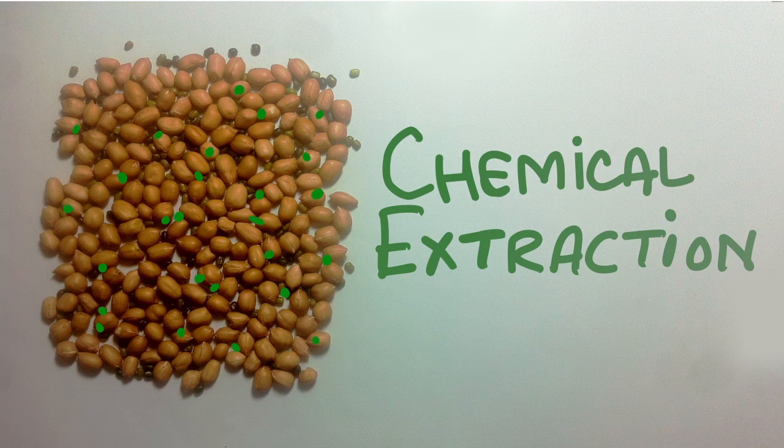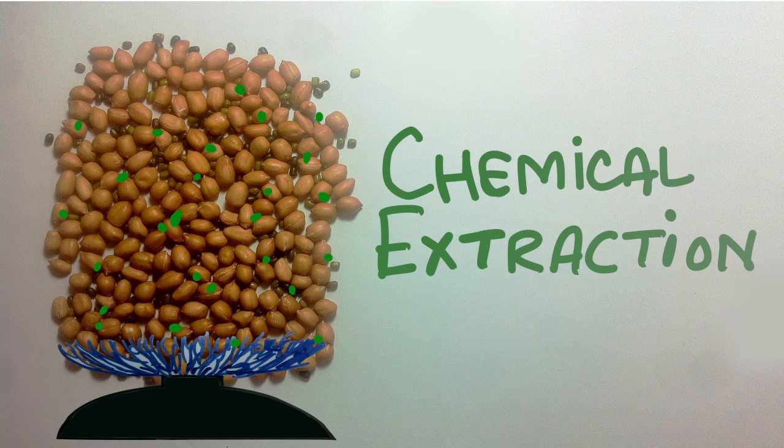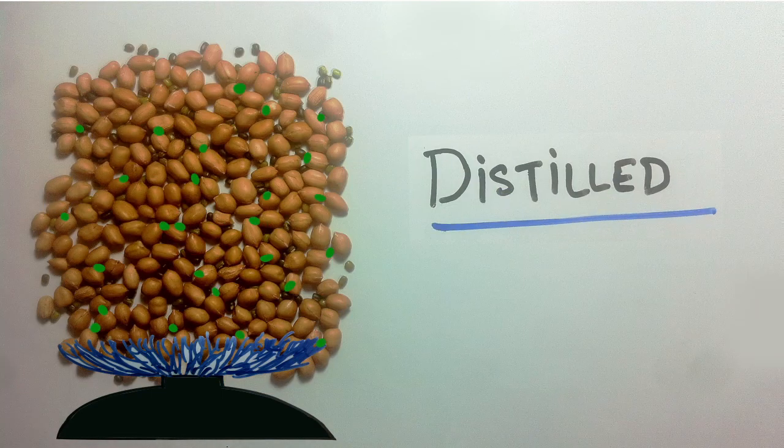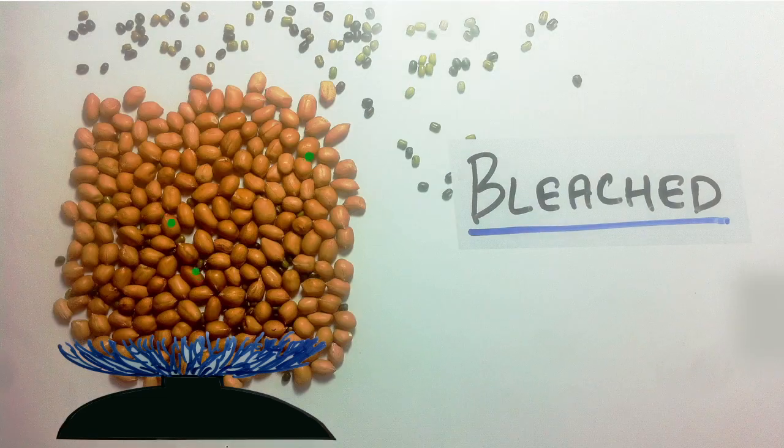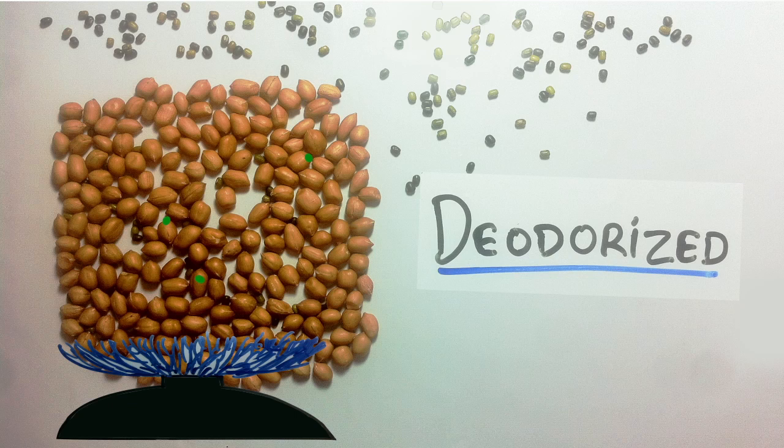It is then heated at a high temperature and refined to make it commercially attractive. It is distilled to remove the chemical solvents, bleached to correct color and remove impurities, and deodorized to remove smell.